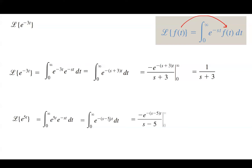As usual, using the chain rule or substitution (u-sub), you get negative e to the power negative (s minus 5) times t divided by (s minus 5), with t ranging between 0 and infinity. If you plug in infinity, because of the negative exponent it lands in the denominator and you get 0, and when you plug in 0 for t you end up with 1 divided by (s minus 5). So some calculations are easy, while others require more applications and techniques.